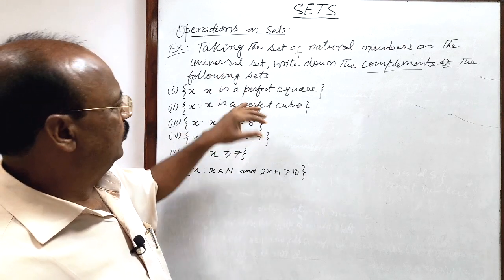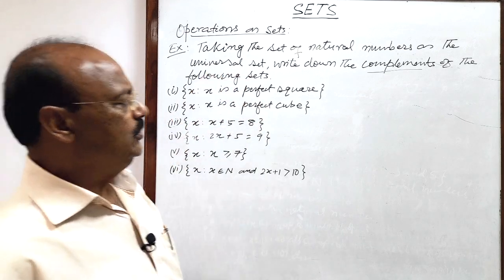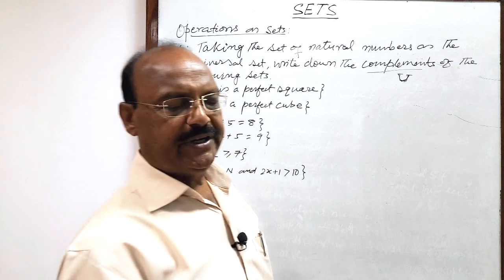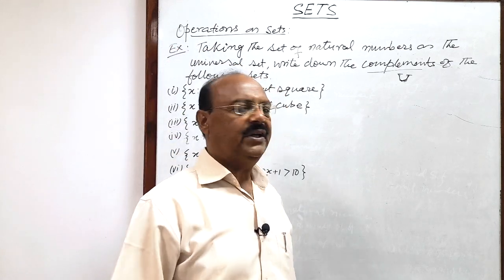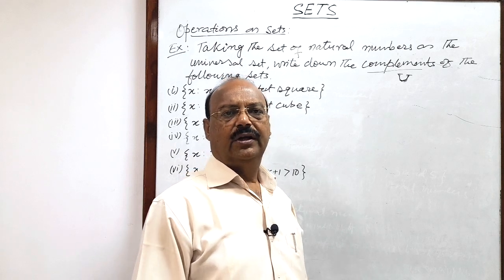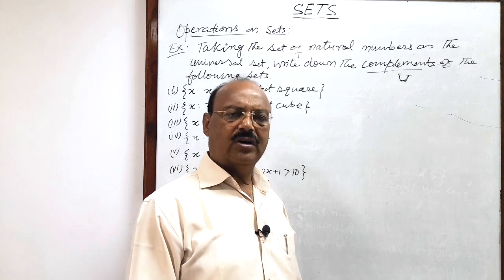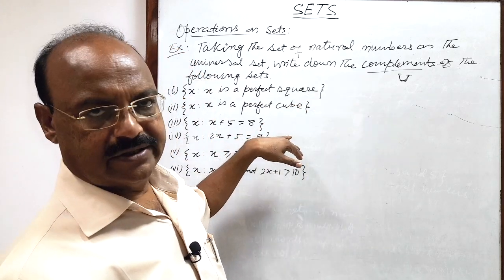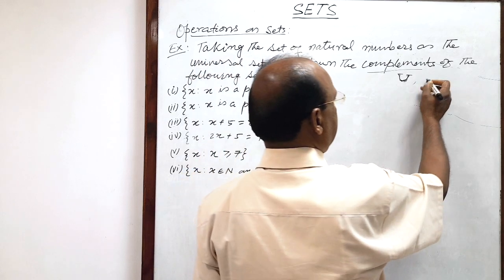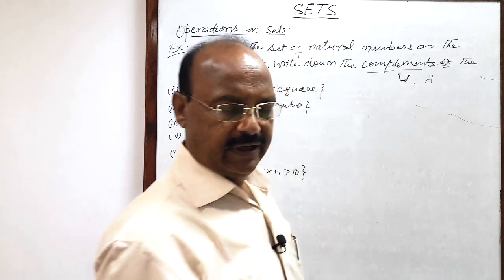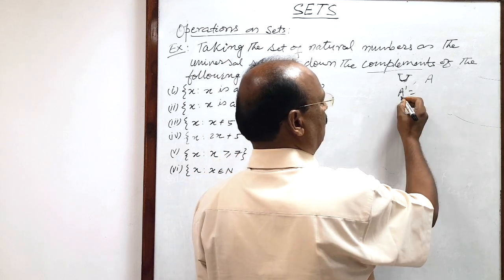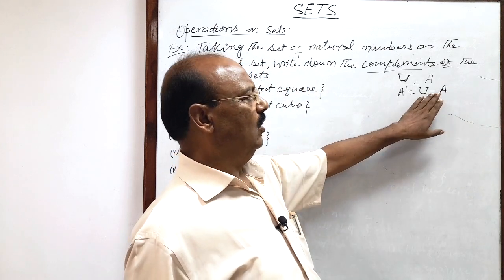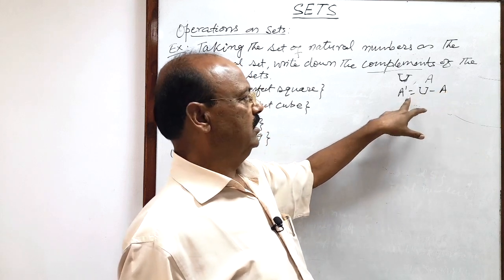Before doing these questions, we have to understand what a universal set is. The universal set is denoted by capital letter U. In any particular context, this is the biggest or largest set — you can say this is a superset, and other sets are smaller sets which are subsets of this universal set. We have to find complements of these sets. If universal set U is given and any set A which is a subset of U is given, then A complement equals U minus A. This means we remove all elements of set A from the universal set to get A complement.